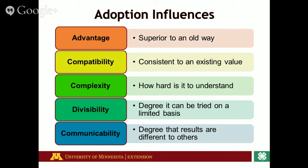The fourth step in adoption influence is divisibility — the degree it can be tried on a limited basis. People typically don't want to jump in 100% at first. They want to try something on a trial basis, give it a little test before they decide to invest a lot of time or money into a new idea or product. The last adoption influence is the degree that results are different from others and how we can communicate those. Knowing it's a reliable product that others are interested in will typically influence someone to adopt that new idea or item.